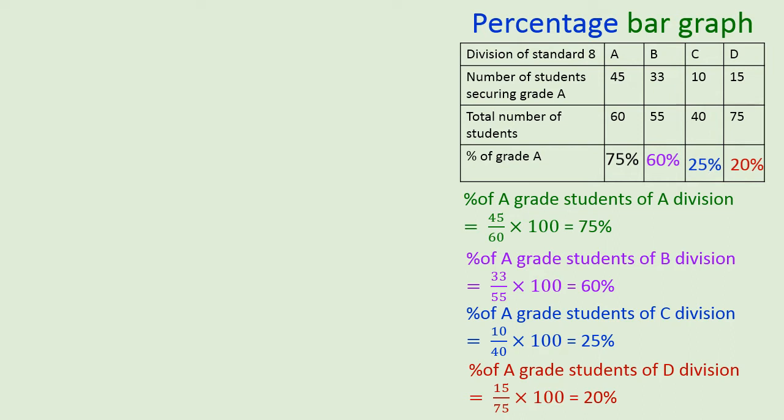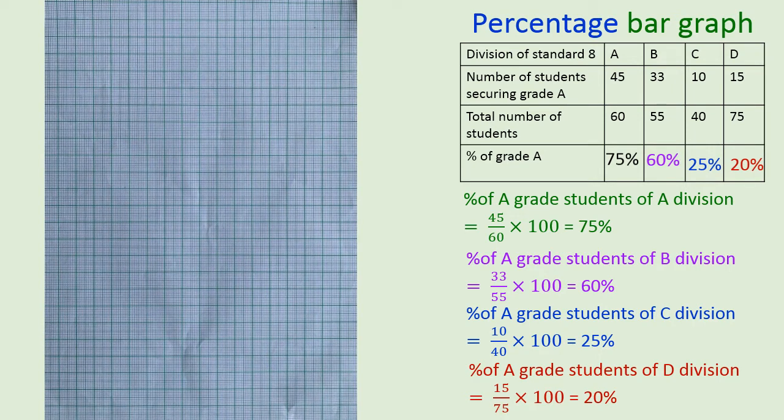Now let's go for drawing the graph. We have got a graph paper. We will want to take dark line as a horizontal one, X axis and Y axis. Then we will want to name them up and down. And we will want to write down scale. We are taking 1 centimeter equals to 10% because we are dealing with the percent size.